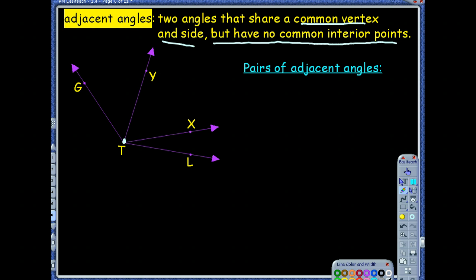They have to have a common side. So if I use ray TY as my common side, I could say angle GTY and angle YTX, or I could have even said YTL would have been adjacent angles because they're right next to each other. They have that one common side, but there's no points in their interiors that would ever overlap.